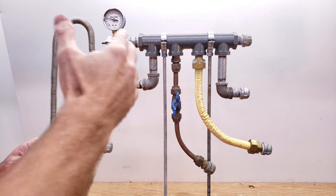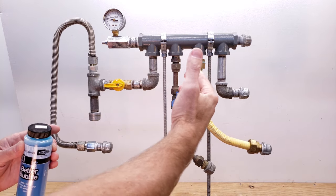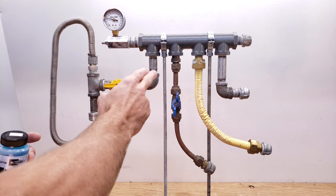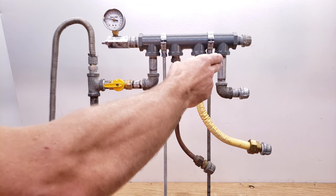Now I'm going to create a leak so you can see what a leak looks like on your corrugated stainless steel tubing and your copper and also on your schedule 40 piping.